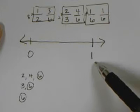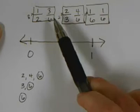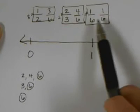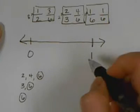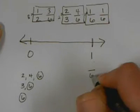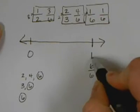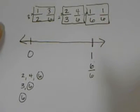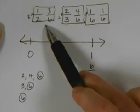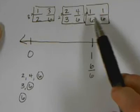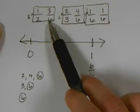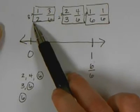Now for one whole, we need it to have the same last name as all the other fractions — we need it to have the last name of sixths. 6/6 is equal to one whole. So now that we know this, we can place these three fractions on our number line. We're going to look at the new fractions but write the old fractions.